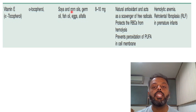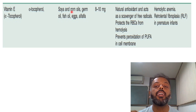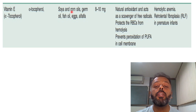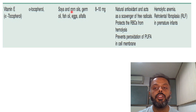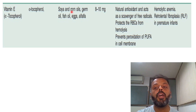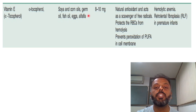Vitamin E is a very potent natural antioxidant and acts as a scavenger of free radicals. It helps prevent lipid peroxidation and protects red blood cells from hemolysis. Deficiency of vitamin E leads to hemolytic anemia and retrolental fibroplasia in premature infants. The daily requirement of vitamin E is 8 to 10 milligrams. Vitamin E is also known as alpha-tocopherol.